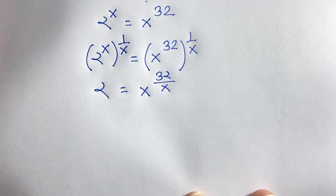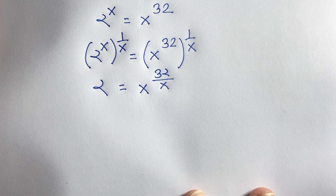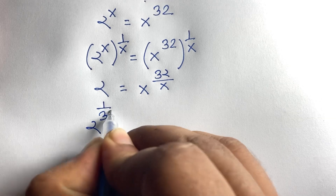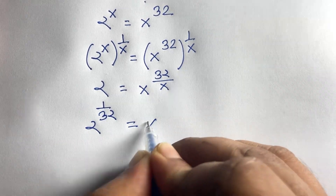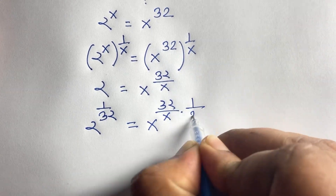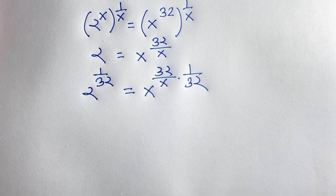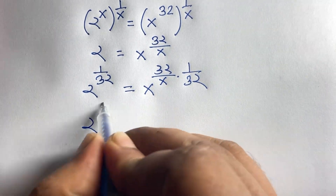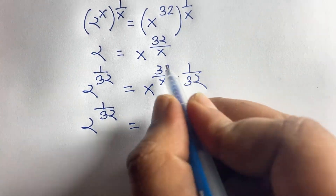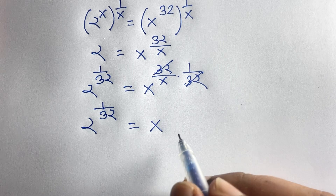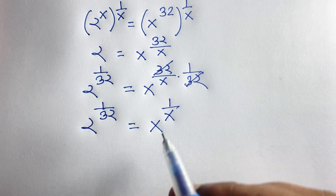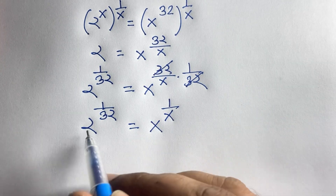Now I multiply again both sides' power by 1 over 32. So here is 2 to the power 1 over 32 is equal to x to the power — the exponent will be 32 over x, multiplied by 1 over 32. This 32 cancels, and we'll find out: 2 to the power 1 over 32 is equal to x to the power 1 over x.